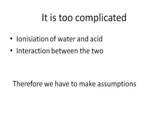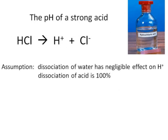So we'll start off with how do I work out the pH of a strong acid. The assumptions that we make are that the dissociation of water and the contribution of H+ ions is negligible, we ignore it. And the dissociation of the acid is complete, 100%. So all the H pluses come from the acid that we're talking about.